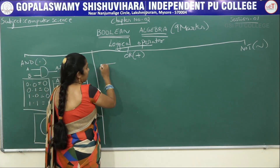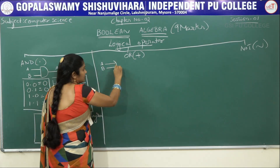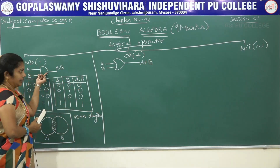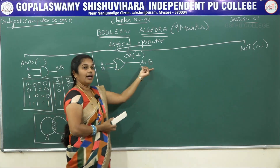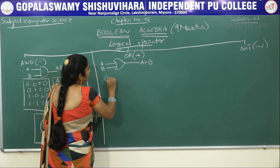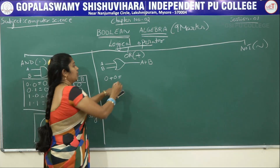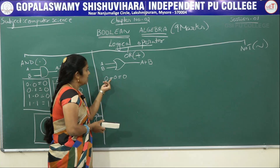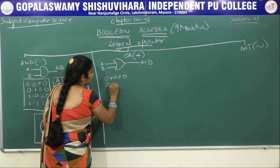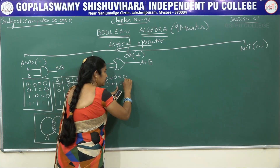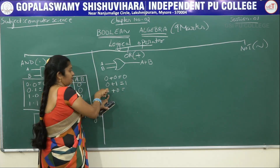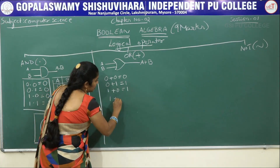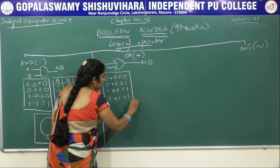For OR, minimum two inputs are required — for example A and B. The symbol is a reverse-C shape, and the output is A plus B. In OR operation, if any one of the inputs is true, the output becomes true. So: 0+0=0, 0+1=1, 1+0=1, and 1+1=1.